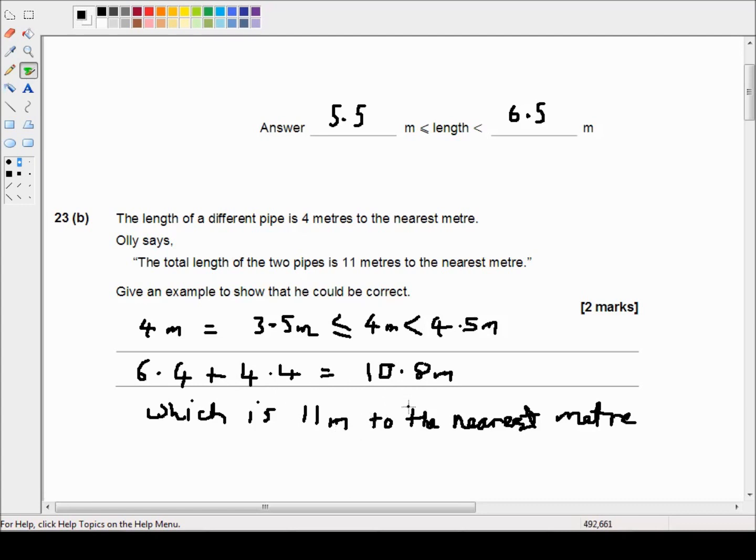But you can easily get something that's bigger than 10.5 meters which does round to 11 meters to the nearest meter.